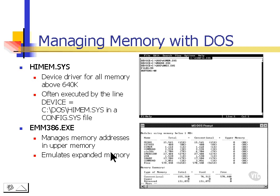Two files that absolutely must be present in order to effectively manage memory with DOS are highmem.sys, which is a device driver for all memory above 640K. highmem.sys will load the device drivers high. It's often executed by 'device=c:\dos\highmem.sys', and this is put into a config.sys file, which we'll take a look at in just a second.